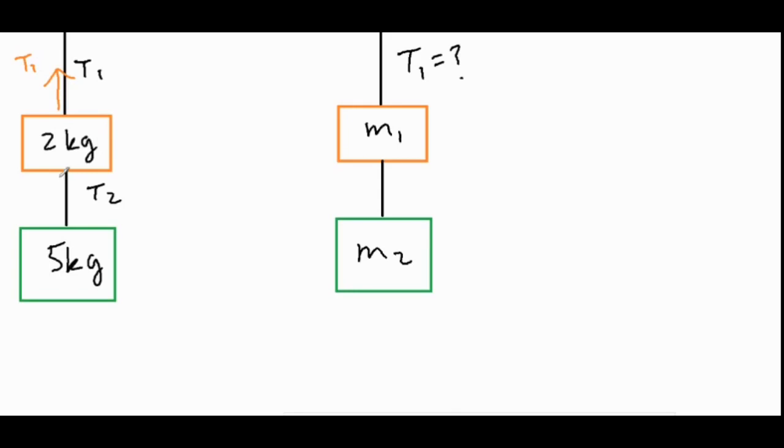And then we have two forces going downwards: we have T2 pulling down on the 2 kilogram object and then we also have the force of gravity of the 2 kilogram object. Secondly, for our green mass we have less forces on that one. It has its own force of gravity from the earth pulling it down, the force of gravity for the 5 kilogram mass, and it has T2 tugging upwards on it.